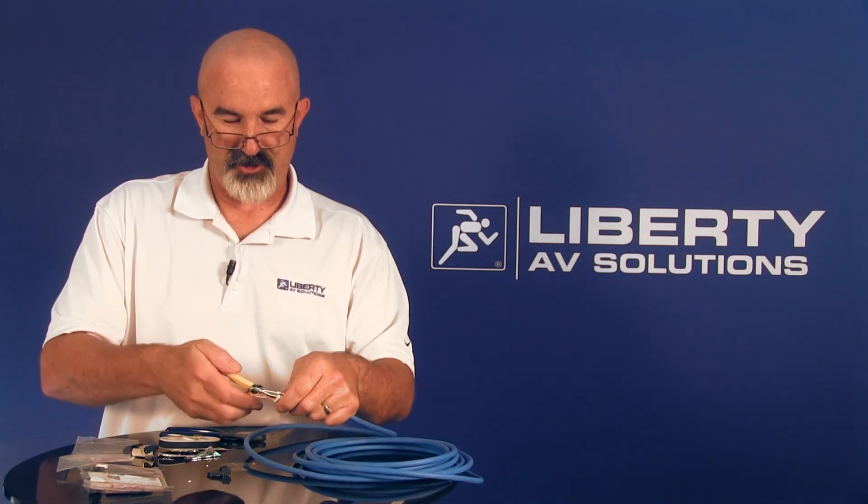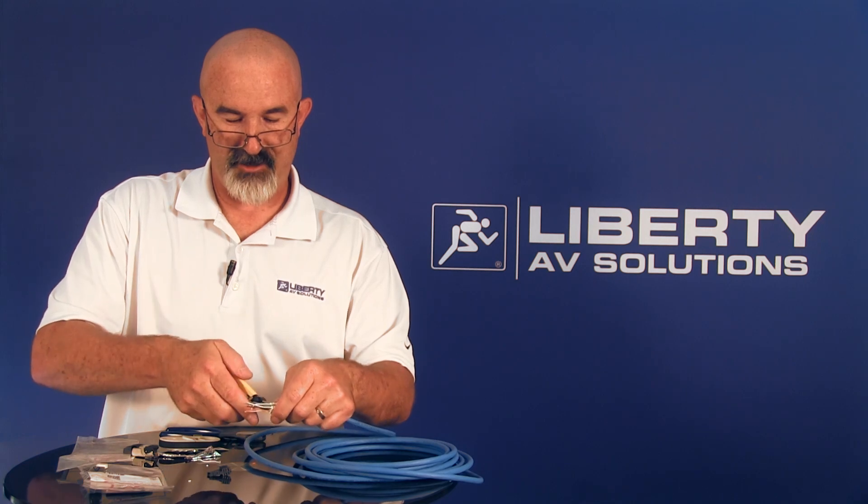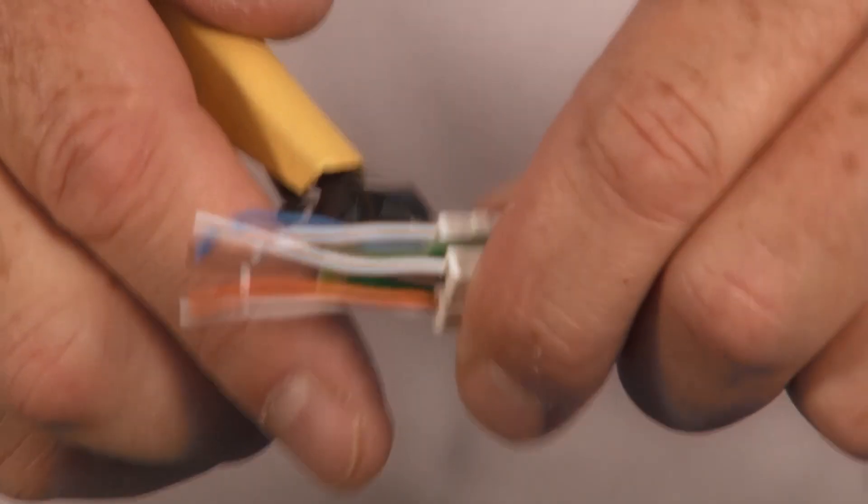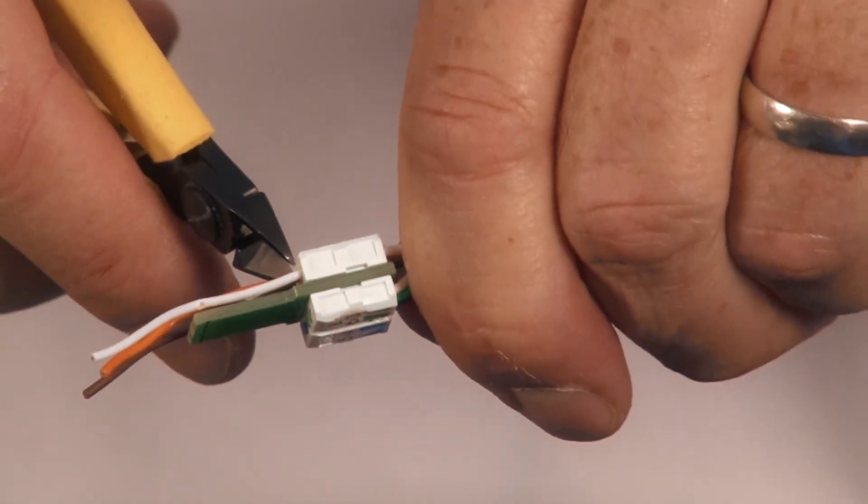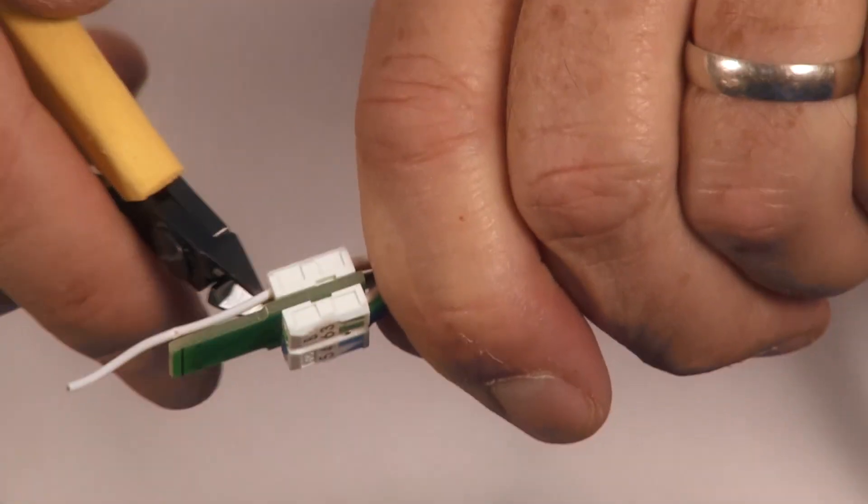Once it's crimped all the way down, now you can trim off your conductors. Using diagonal cutters, do them flush cut. It should be nice and smooth. All the conductors are cut off.